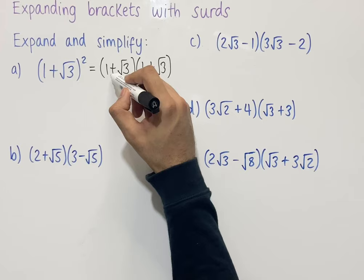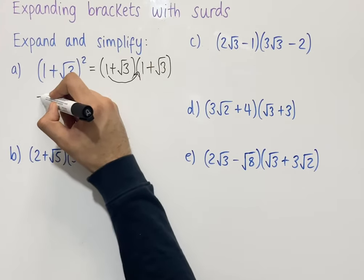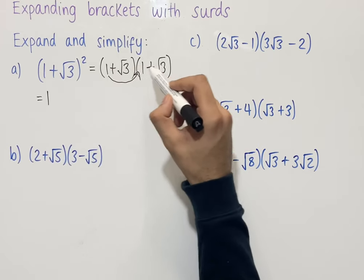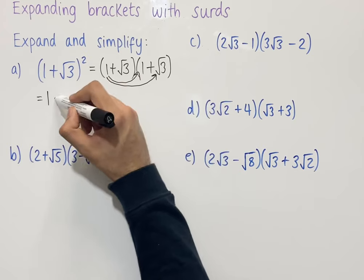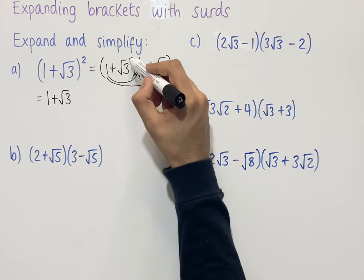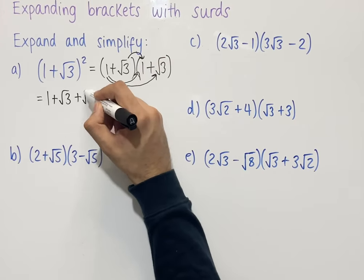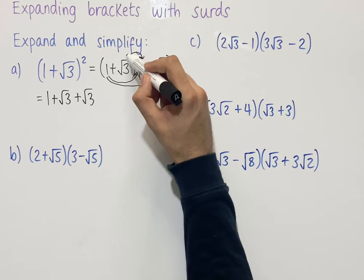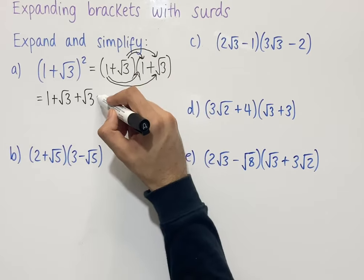We multiply the first terms with each other: 1 times 1 equals 1. Then we have the terms on the outside: 1 times root 3, which gives root 3. Then the terms on the inside: square root of 3 times 1, which is root 3. And finally the last terms: root 3 times root 3, which gives us the square root of 9.